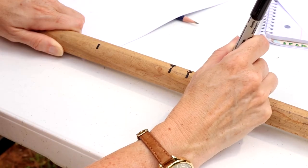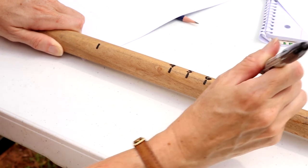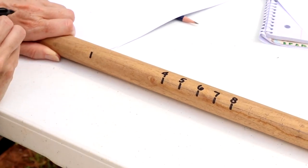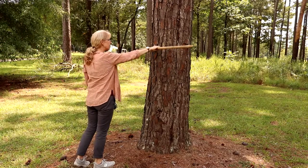After you are convinced your stick is properly marked, go over your pencil marks with a permanent marker or another permanent method. This is your chance to be creative. Now, you are ready to measure tree diameters using your personalized Biltmore stick.